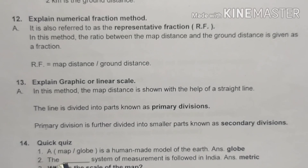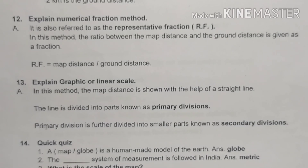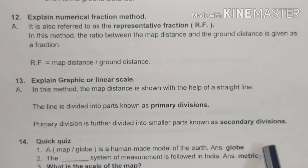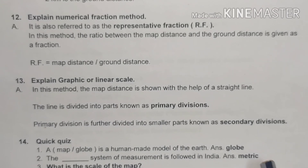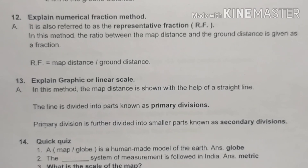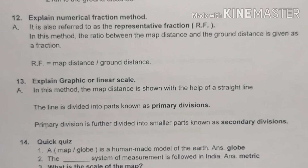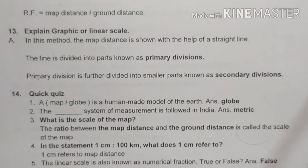The fourteenth question is in the form of a quiz. First: a globe is a human-made model of the earth. Second: the metric system of measurement is followed in India. Third: what is the scale of the map? The ratio between the map distance and the ground distance is called the scale of the map.